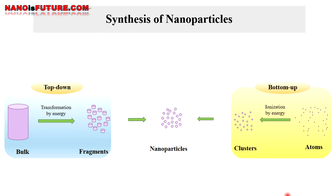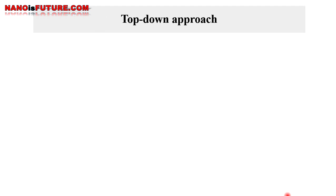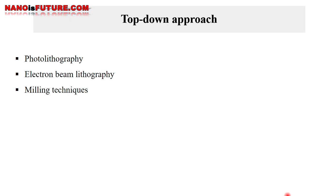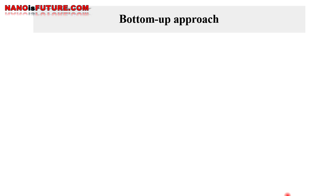In the top-down approach, synthesis is initialized with a bulk counterpart that is leached out systematically bit by bit, leading to the generation of fine nanoparticles. Some of the commonly used top-down methods for the production of nanoparticles include photolithography, electron beam lithography, milling techniques, anodization, and ion and plasma etching.